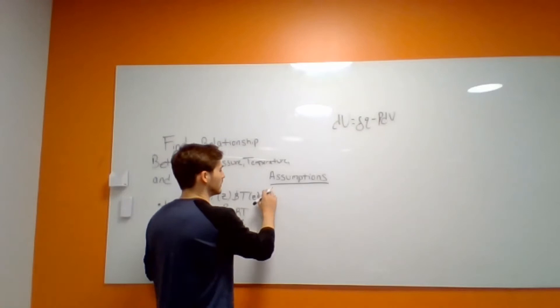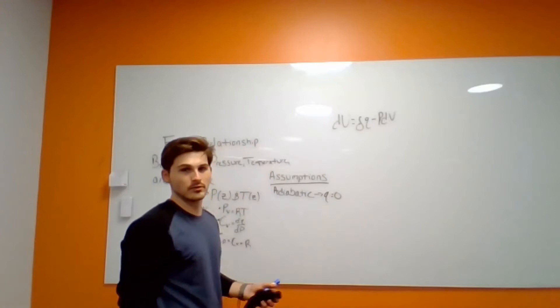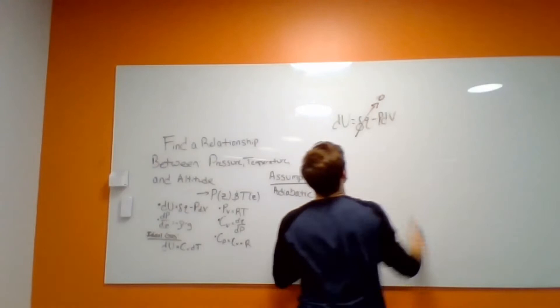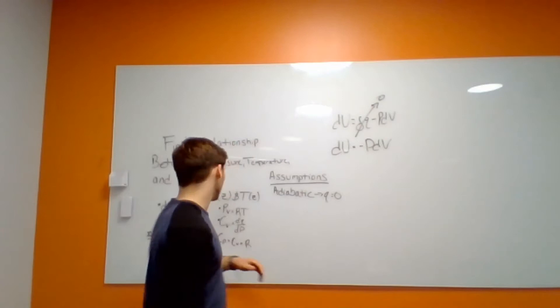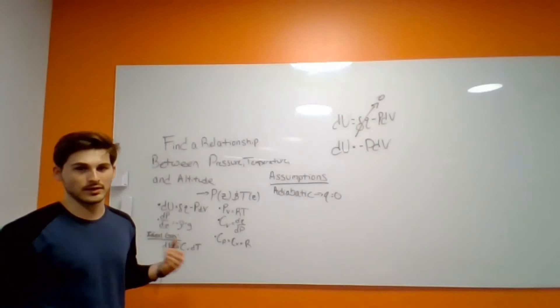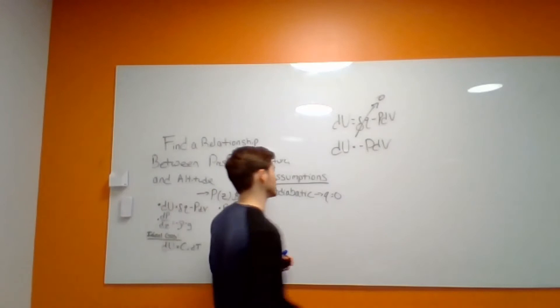We're going to assume that the atmosphere we're working with is adiabatic. So Q is equal to zero — no heat is put into or out of the system. Therefore, the change in internal energy is equal to negative P·dV. From here we'll use the ideal gas relation, treating the atmosphere as an ideal gas.